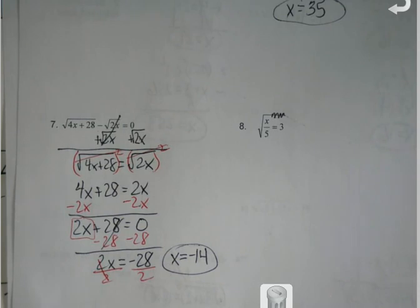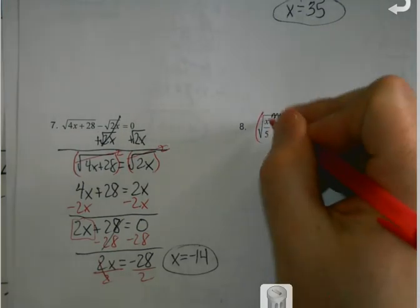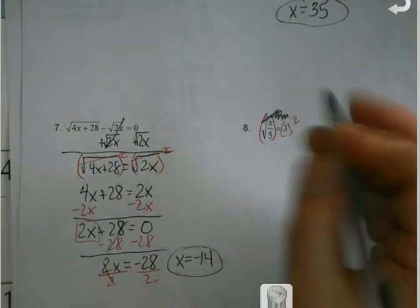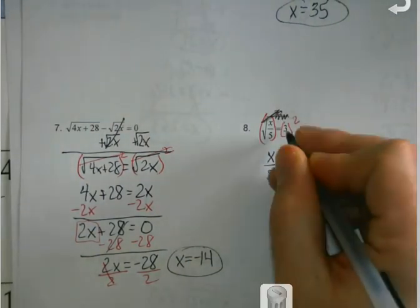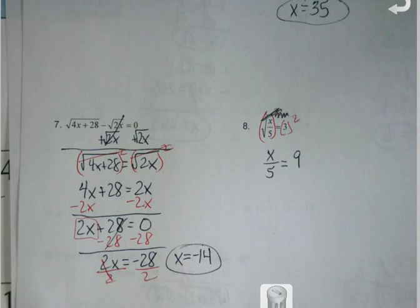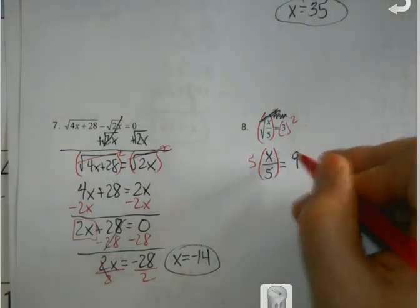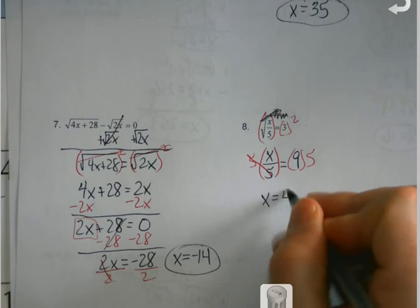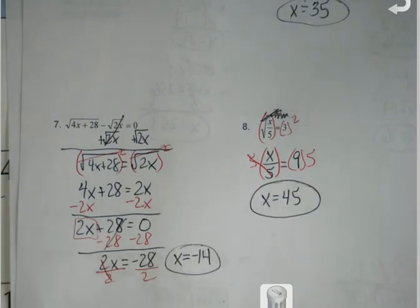What if it's a fraction underneath? We don't care. It's still isolated. The squared and the square roots still cancel. 3 squared is still 9. But now I look and I go, okay, what am I doing to x? I'm dividing it by 5. Okay, the opposite of dividing by 5 is to times by 5. And I get my answer that way. So that's all we're really looking at as far as these go.